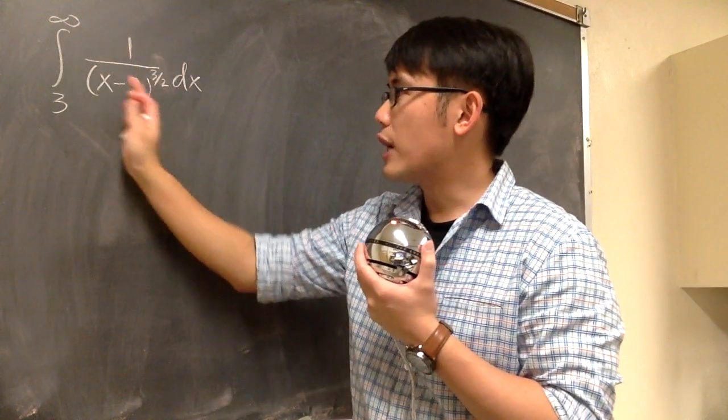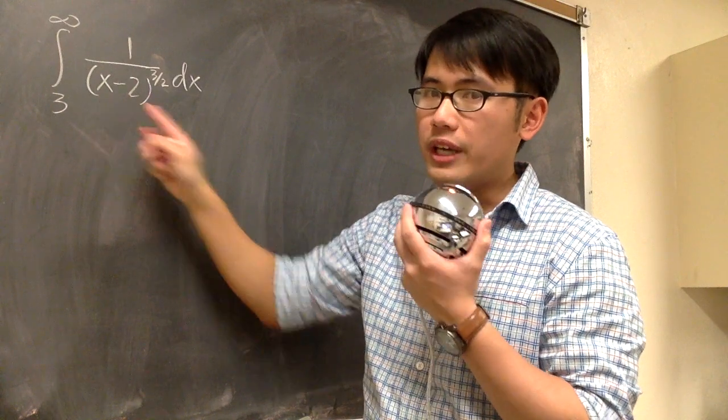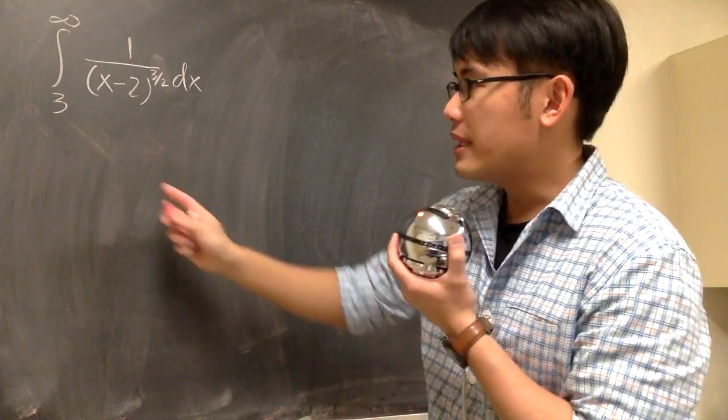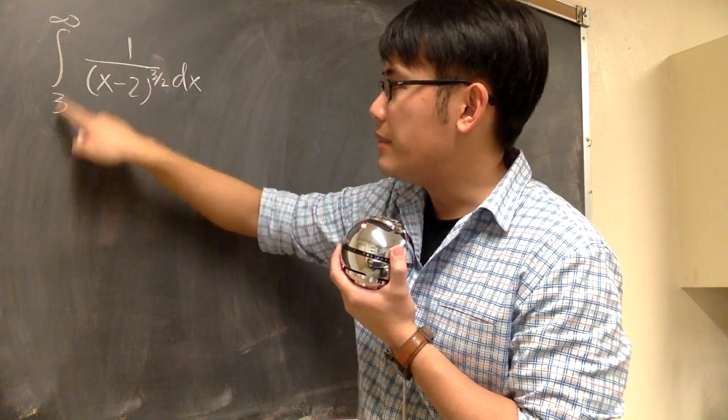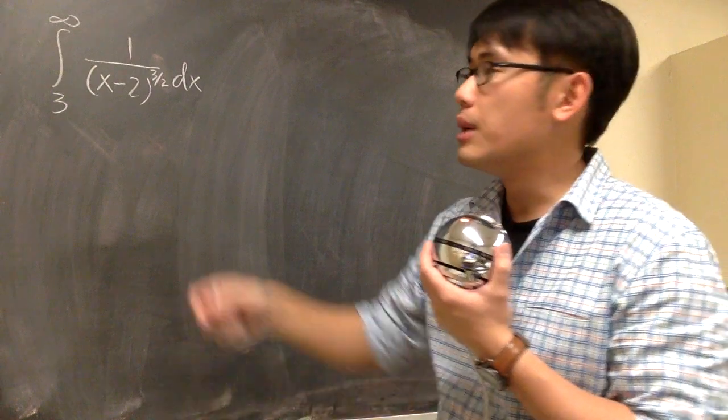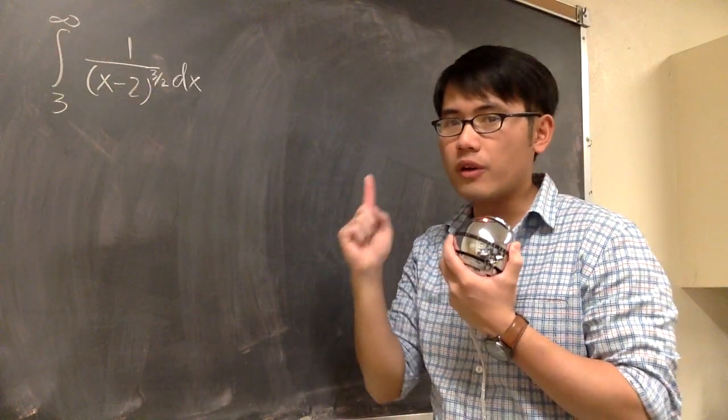First thing, look at this rational expression. On the denominator, you cannot let x equal 2, otherwise you will get a vertical asymptote. But luckily, the limit is from 3 to infinity. However, this is still improper because you have infinity right here. This is the improper integral of type 1.